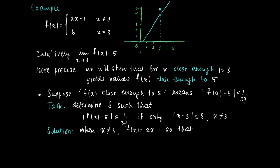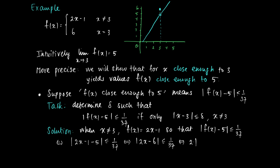When x is unequal to 3, we know that f(x) equals 2x minus 1, so |f(x) − 5| ≤ 1/37 is equivalent to |2x − 1 − 5| ≤ 1/37, which is equivalent to |2x − 6| ≤ 1/37. Taking out the factor of 2, we get 2·|x − 3| ≤ 1/37, so the distance |x − 3| must be at most (1/2)·(1/37). This gives us our candidate delta, so we can pick delta = 1/74.